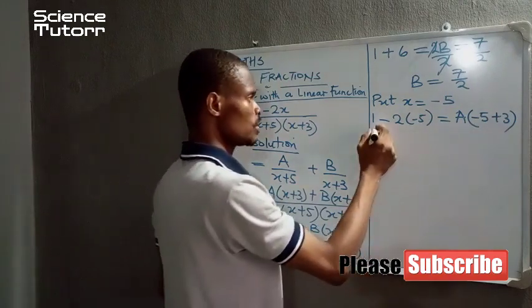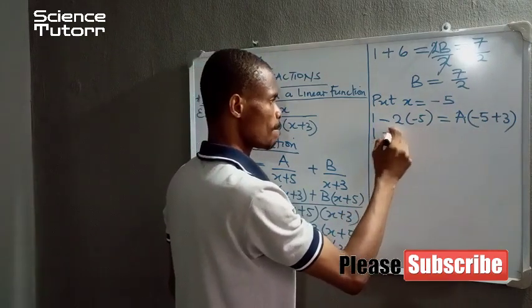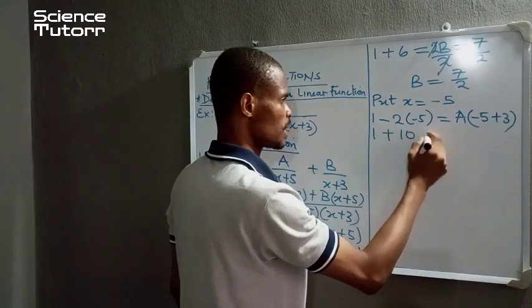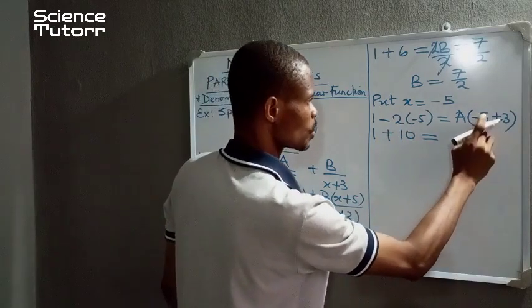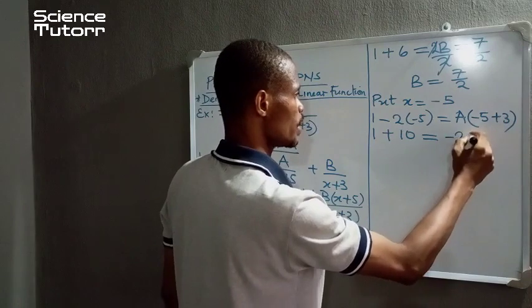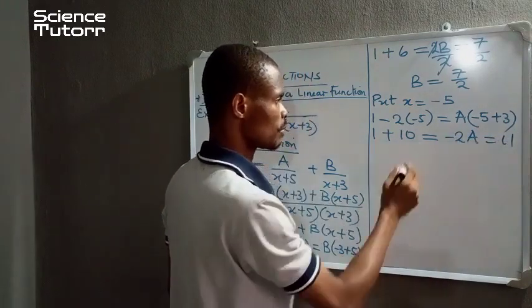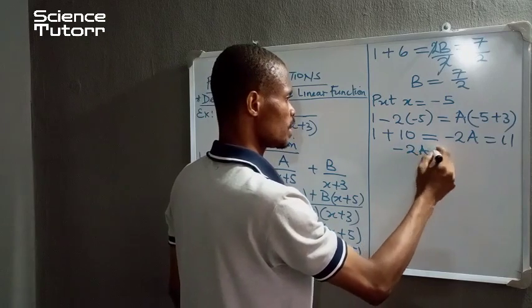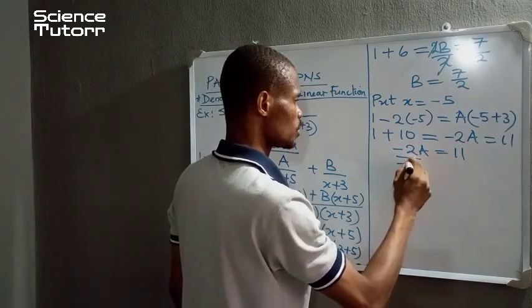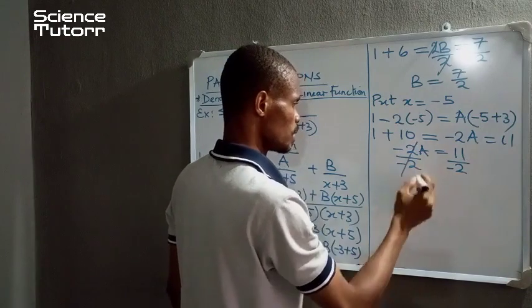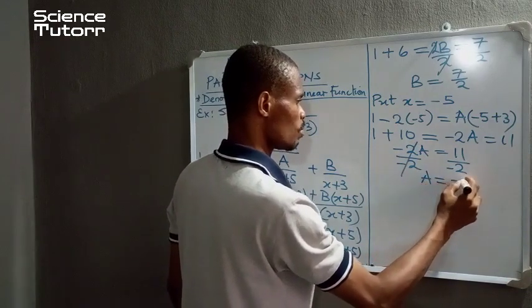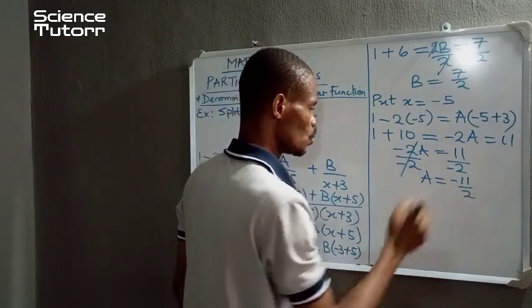So B has no value. 1 plus 2 times 5 is 10, is equal to minus 5 plus 3 is minus 2A. So which is 11. 1 plus 10 is 11. So minus 2A is equal to 11. Divide both sides by minus 2. So that means A to be equal to minus 11 over 2.